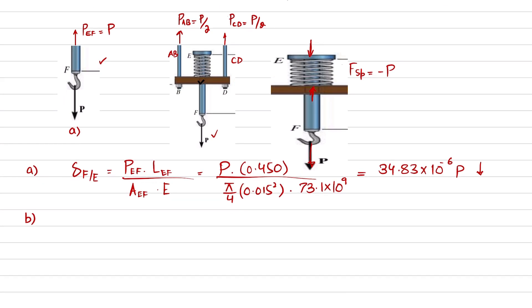Same for rods AB and CD—both are the same. So we are going to find out the deflection of point B with respect to point A. Change in point B with respect to A is equal to P_AB, which is P/2, times length, which is again 450, which is 0.450, divided by area π/4 d².